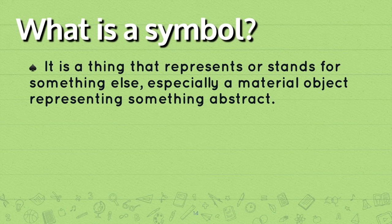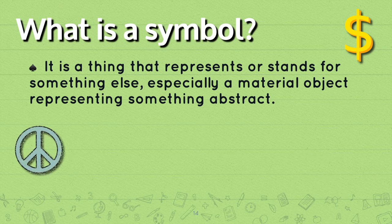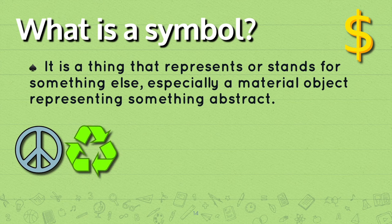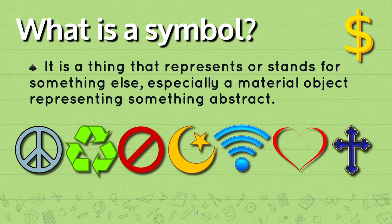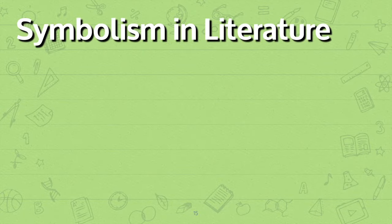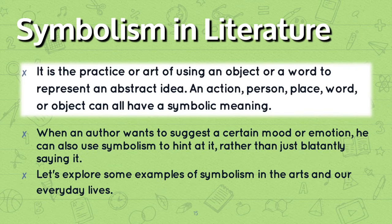So now let's take a look at symbolism and answer the question: what is a symbol? It is a thing that represents or stands for something else, especially a material object representing something abstract. For example, the dollar sign, the peace symbol, recycle, Islam, Wi-Fi, love, or Christianity. Symbolism in literature is the practice or art of using an object or a word to represent an abstract idea. An action, person, place, word, or object can all have a symbolic meaning. When an author wants to suggest a certain mood or emotion, he can also use symbolism to hint at it rather than just blatantly saying it.